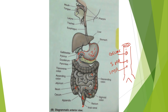The upper branch supplies the stomach, liver (hepatic artery), and related structures. The superior mesenteric artery supplies the midgut, including the small gut. The inferior mesenteric artery supplies the large gut.